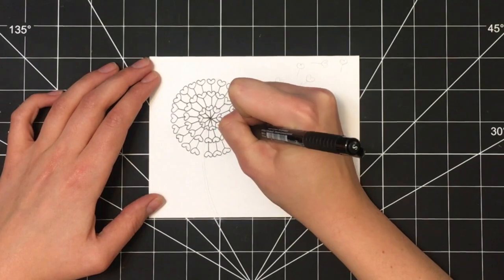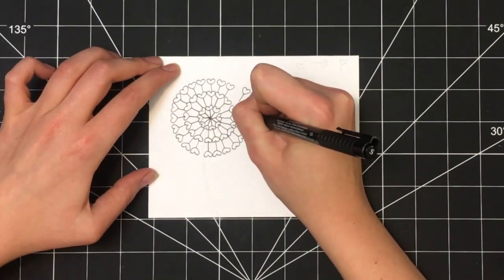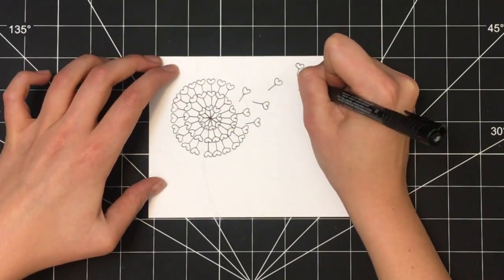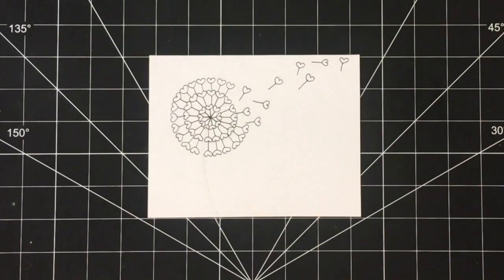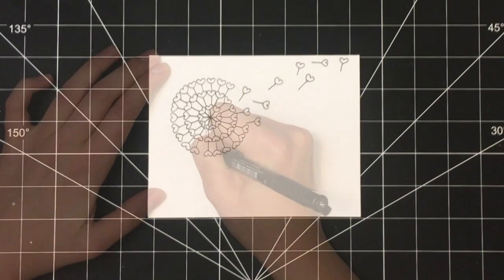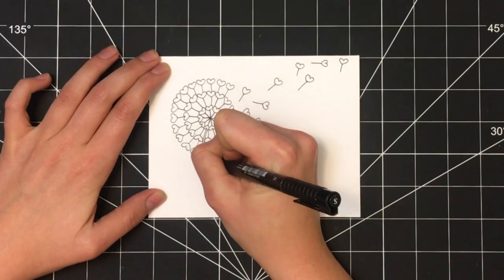I started with the body or main part of the dandelion, then moved on to the pieces that are blowing away, and finally outlined the stem.